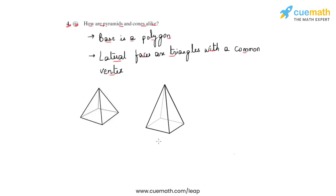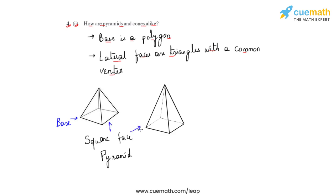Here we have taken two examples where this part represents the base of this pyramid, and we see that the base is a square — a square-faced pyramid. Both shapes are square-faced pyramids, and we also see that the lateral faces are triangles where the triangles go and meet at a common vertex, as we see in this figure. This is how we observe the properties of a pyramid.